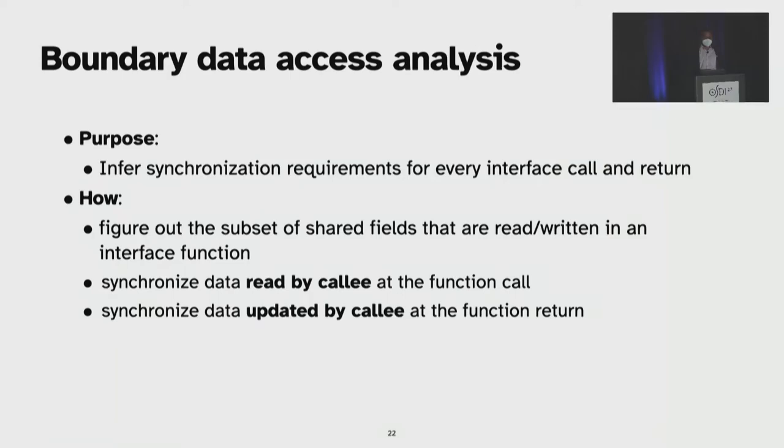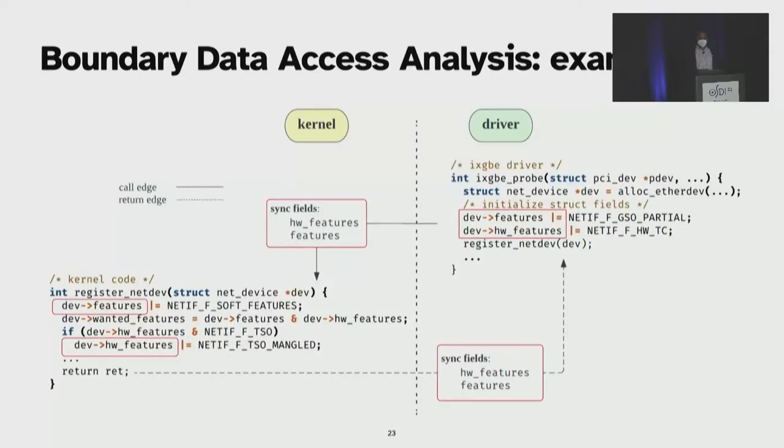The next step, we perform boundary data access analysis. The main idea is to infer synchronization requirements for every interface function on every call and return edges. How do we do it? First, we figure out the subset of shared fields that are read or written in an interface function. Then, we synchronize the data read by the callee at the call edge and synchronize the data updated by the callee at the return edge. Referring to our previous example, we synchronize only the fields that are accessed by the kernel during the function call edge. For example, here, hardware features and features. While returning, we synchronize back the updated fields and omit the private field that is used only by the kernel.